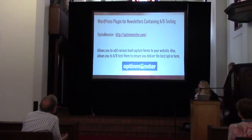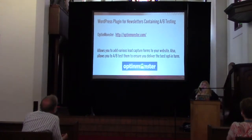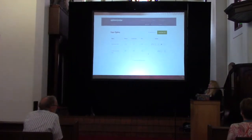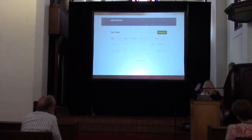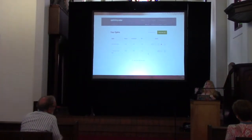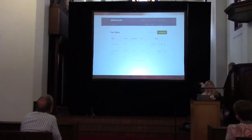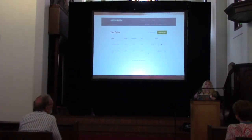OptinMonster also has A/B testing built in. You can add variations for your lead capture forms. For example, with a free ebook offer, there's a variation button and you can create another one with the exact same design but different text or colors, and deliver that one to see how it goes. They collect the information on their website — it's a SaaS — so it's less of a hindrance on my website in regards to site speed.